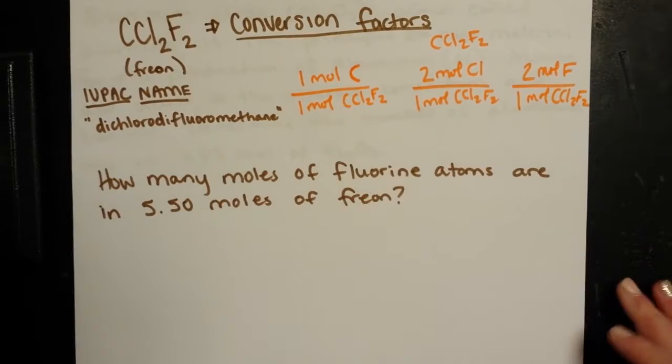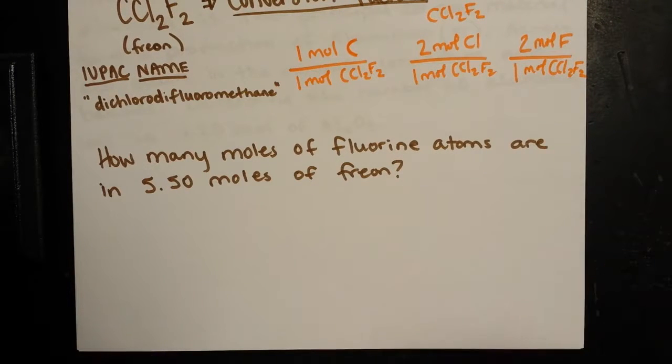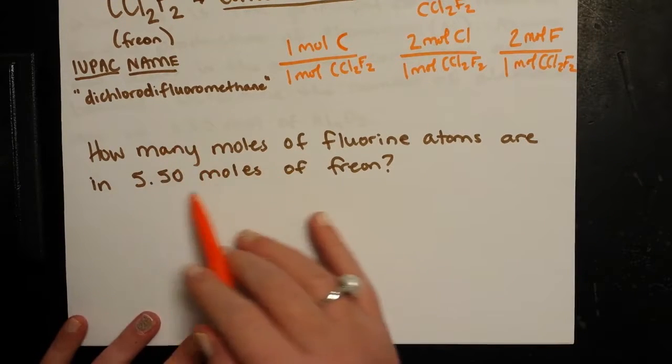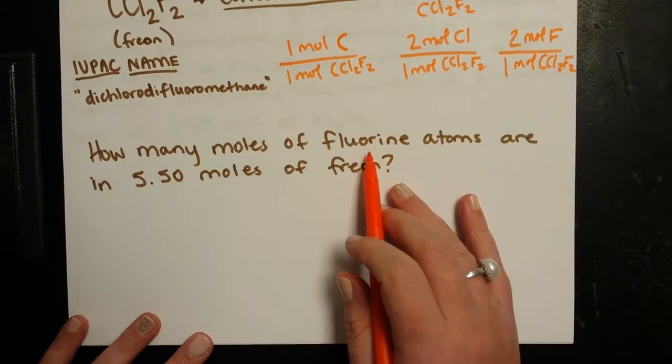This is useful in determining a number of atoms of a specific element when you have a whole bunch of the compound that it is in. So here, if I know that I've got a certain number of moles of Freon, I can see how many fluorine atoms are present.